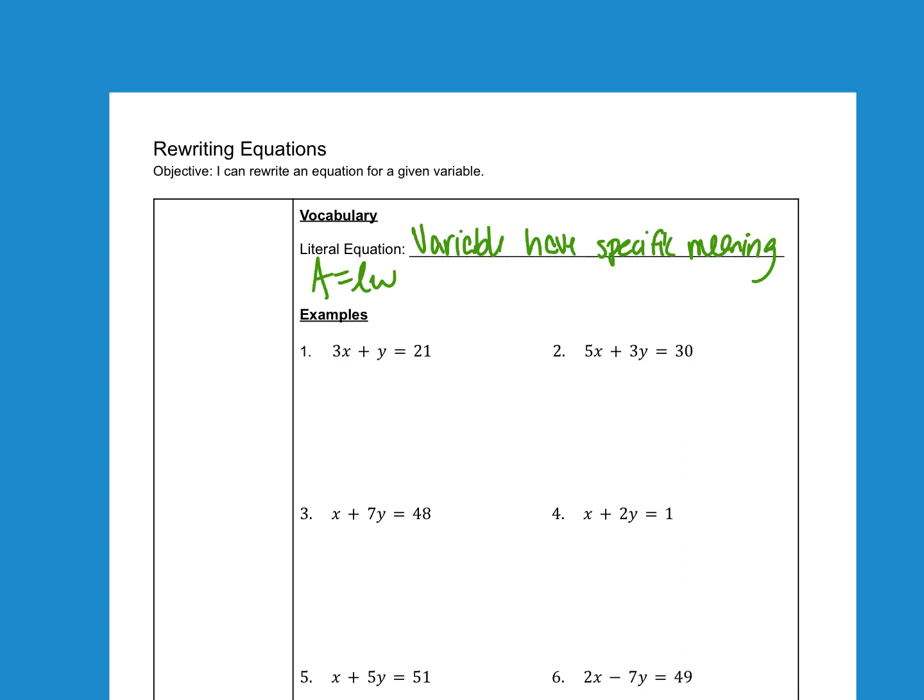When we're solving these literal equations, we're not actually getting a specific answer. So we're not going to end up with Y equals 2 or W equals 5. We're just going to manipulate the equation so that everything's in a different order, different variables by itself.